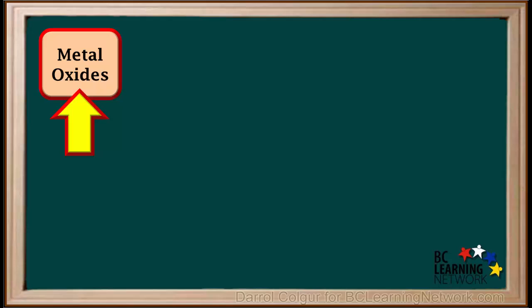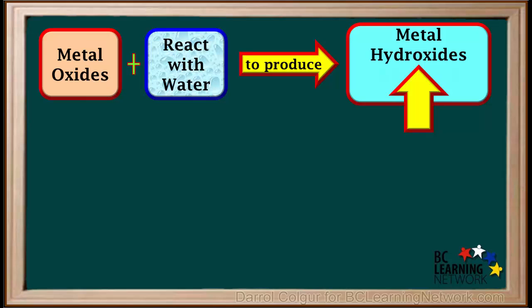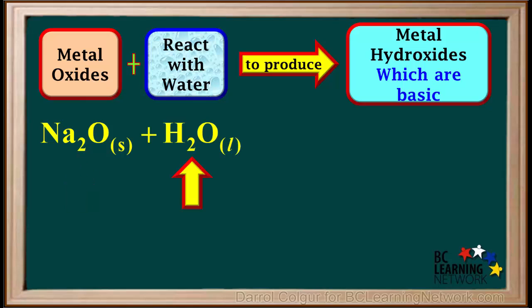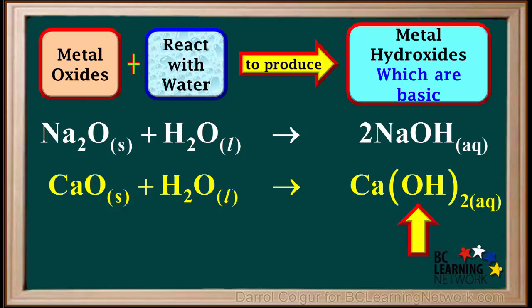We can summarize what we've seen by saying that metal oxides react with water to produce metal hydroxides, which are basic. For example, the metal oxide Na2O reacts with water to produce the base NaOH, sodium hydroxide. And the metal oxide CaO reacts with water to form the base Ca(OH)2, calcium hydroxide.